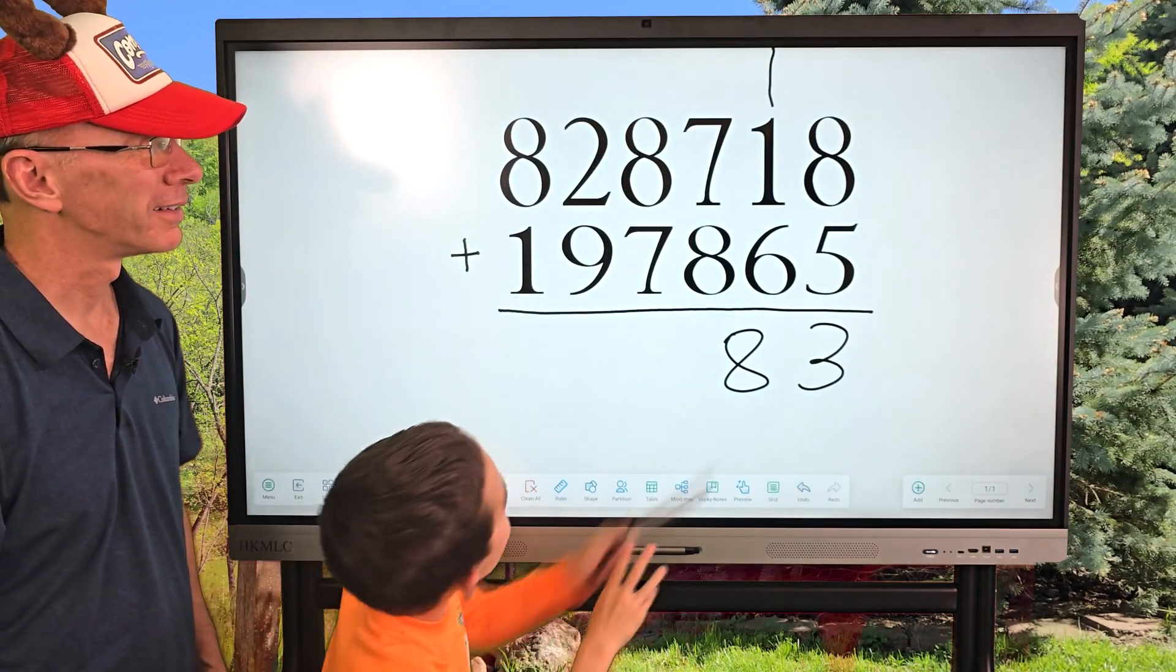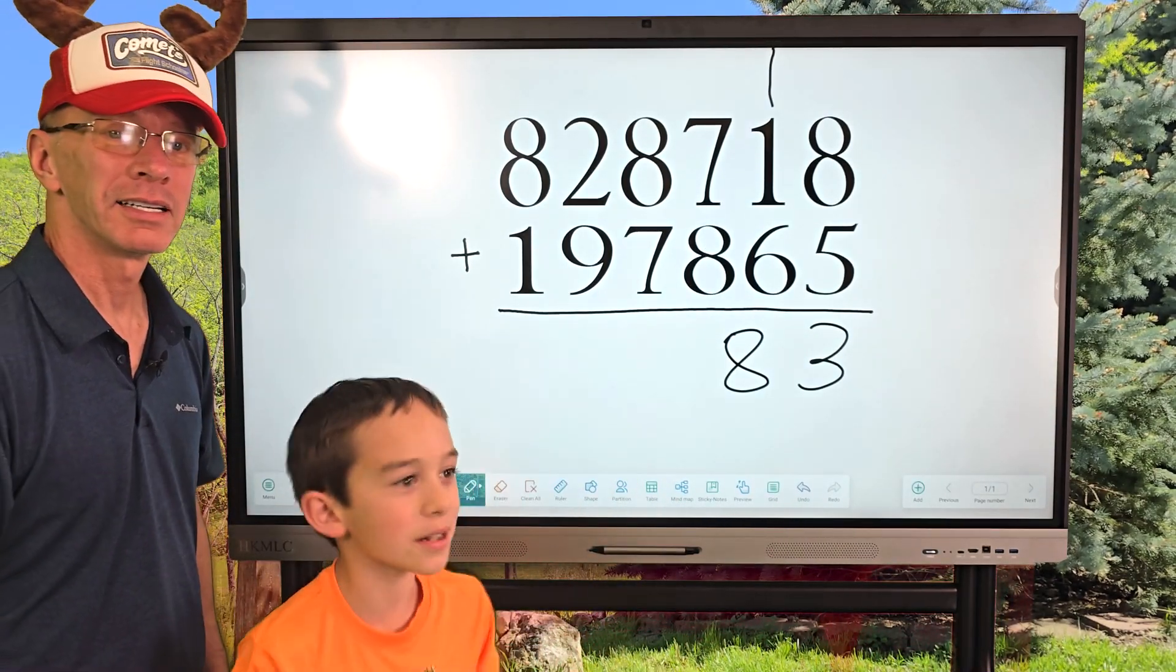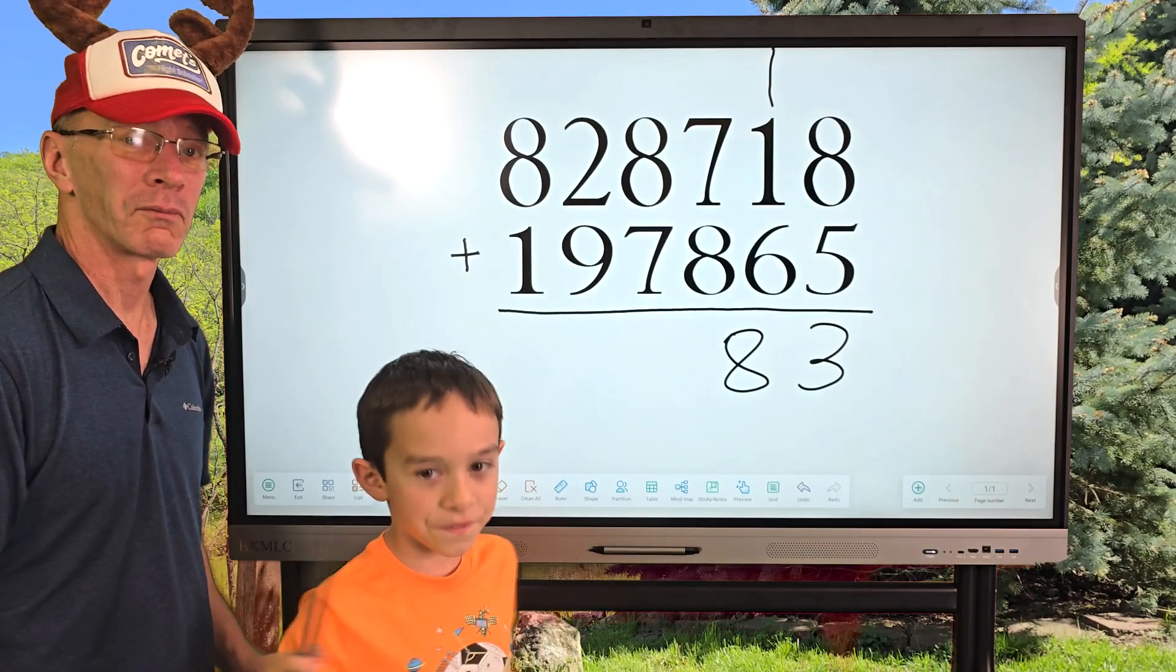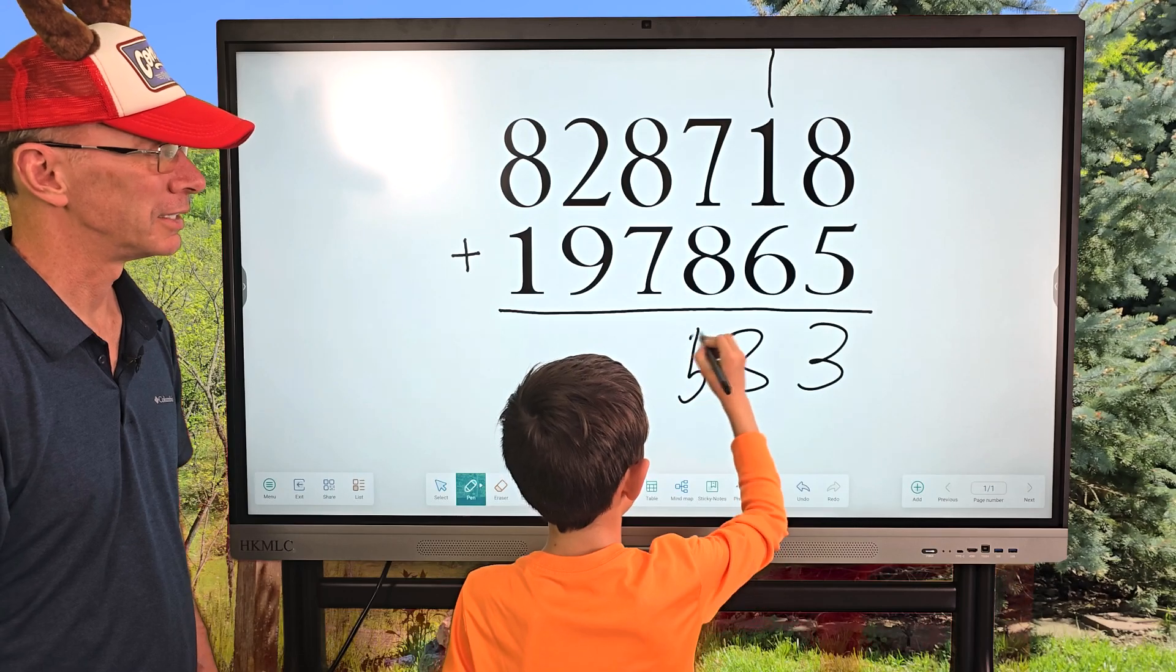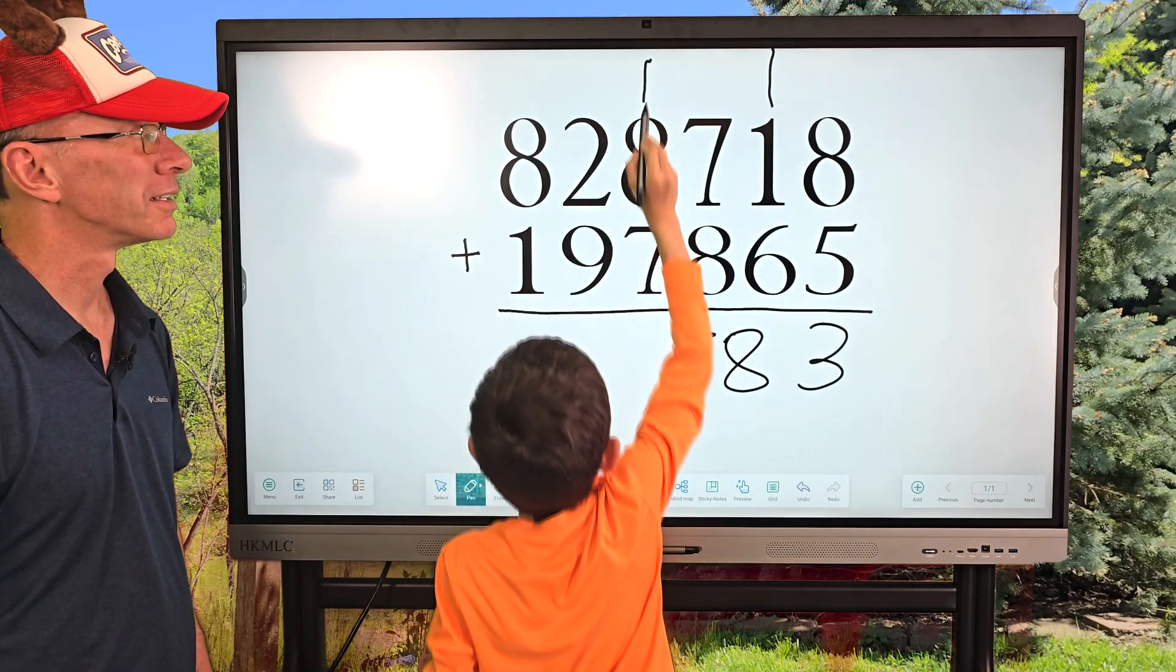And then we do this one, and 7 plus 8 is 15. So you put the 5 right here. He's learning really well. And then you put the 1 up here.